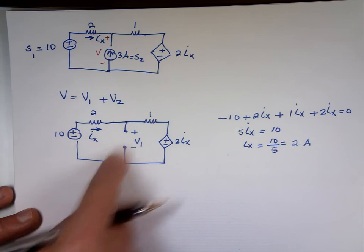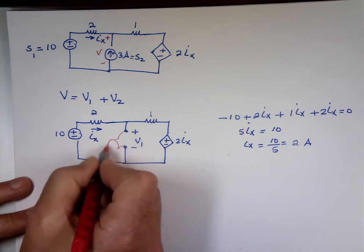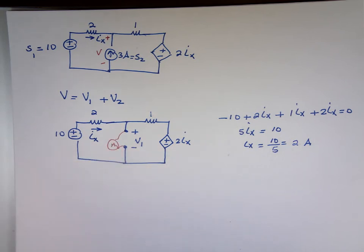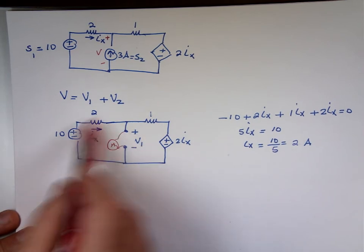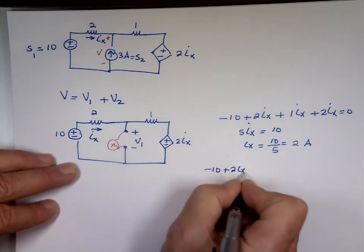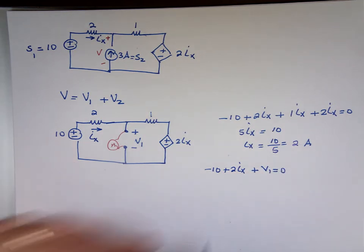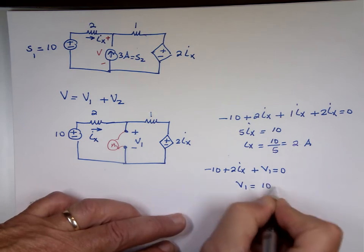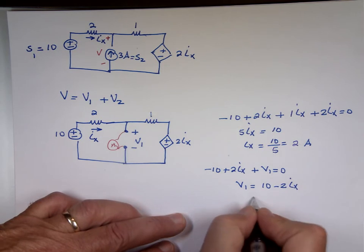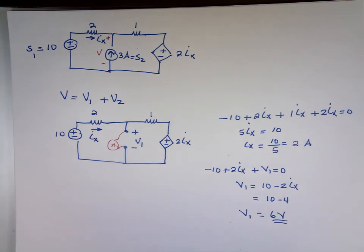I can find V1 now. Notice if I do KVL right there, if you attach a meter right here, there's my meter, you have a closed circuit right there. I can do KVL. Negative 10 plus 2 times i sub x plus V1 is equal to 0. So V1 is equal to what? 10 minus 2 times i sub x. Well, i sub x is 2 here. 10 minus 4, so V1 equals what? 6 volts. That's just due to source number 1.